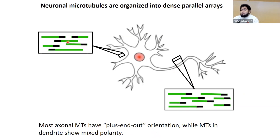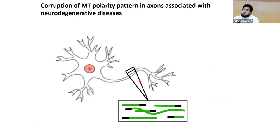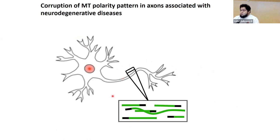Microtubules that reside in the dendrites have a mixed polarity pattern, with microtubules moving both right and left, which is not uniform. This is important because microtubules with a uniform polarity pattern help ensure polarity is not corrupted. If the uniform polarity pattern is corrupted, it leads to neurodegenerative diseases such as Alzheimer's disease. Preventing that is the focus of our study.